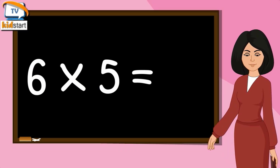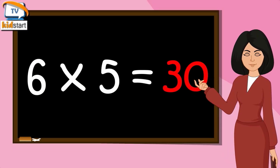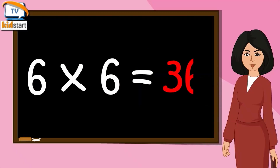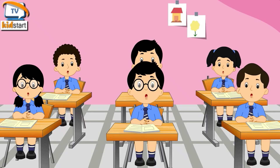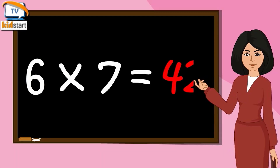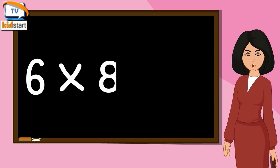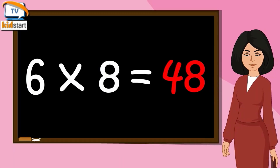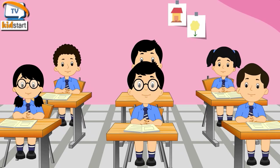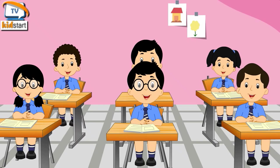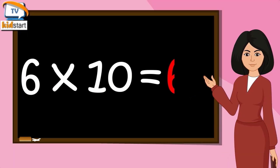Six fives are thirty. Six sixes are thirty-six. Six sevens are forty-two. Six eights are forty-eight. Six nines are fifty-four. Six tens are sixty.